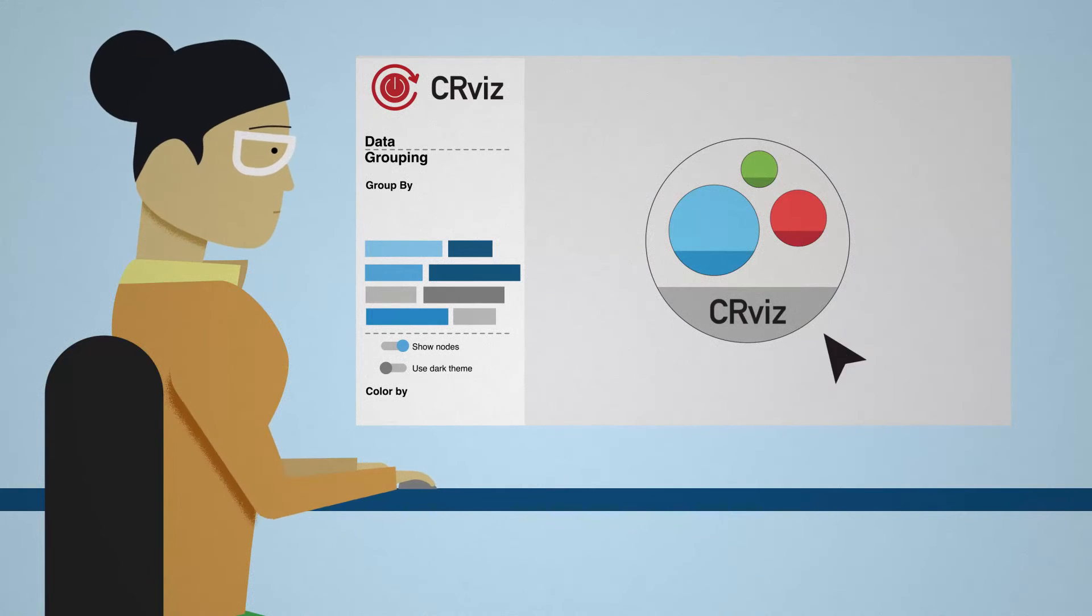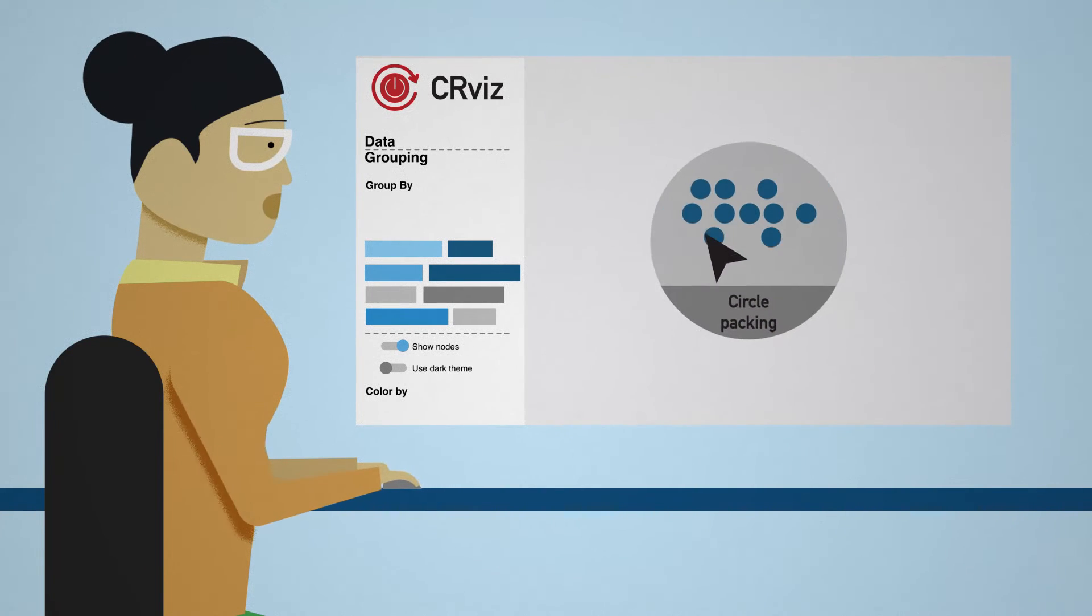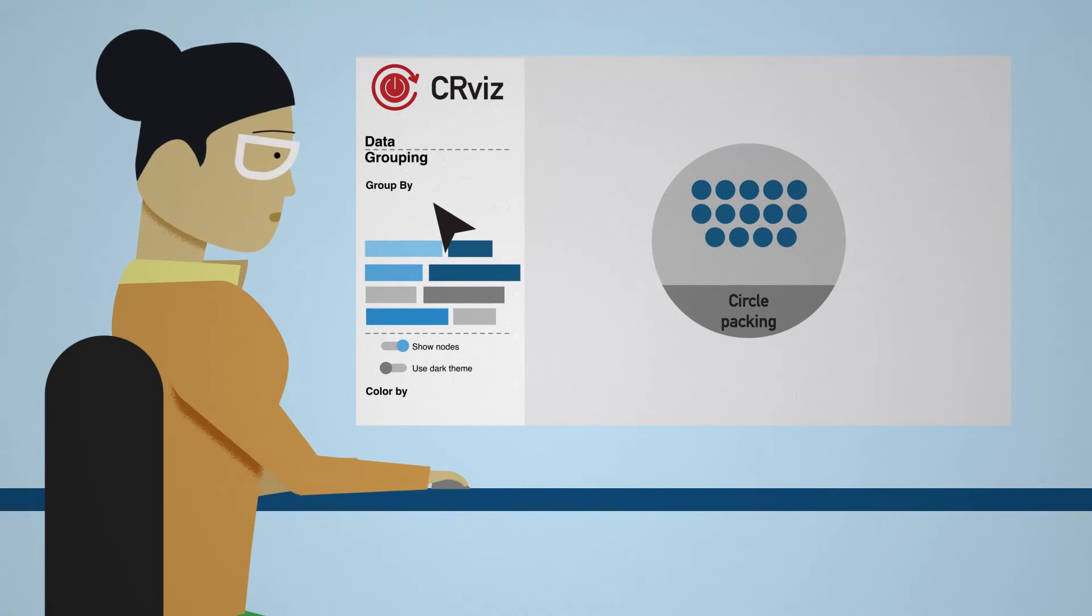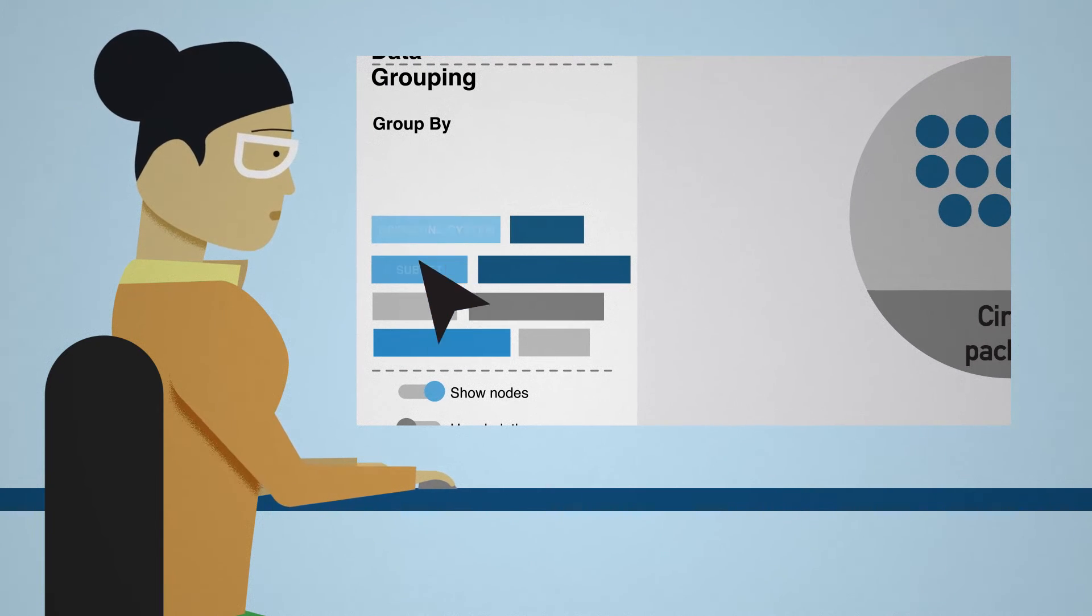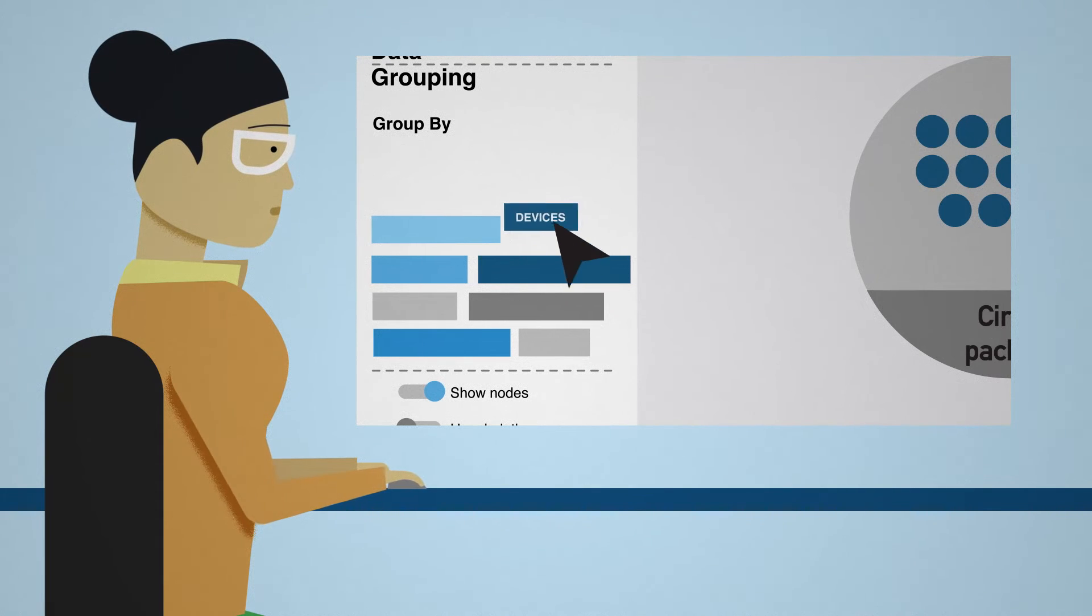CR-Viz is a web application that uses an interface technique called circle packing to represent the items found in a dataset. CR-Viz lets you organize these items based on attributes in the data so you can answer questions such as: